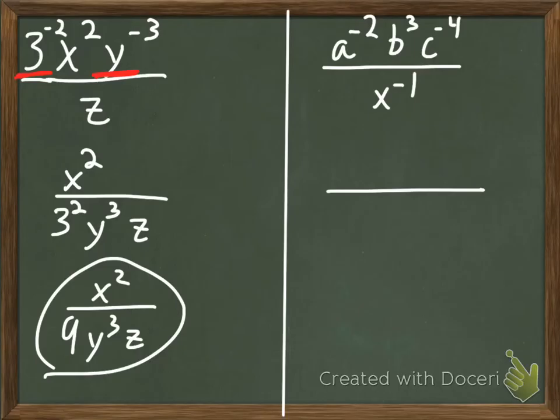So, my division bar, and I look. What stays in the numerator of my fraction? That b to the 3rd. What's going to move from the numerator to the denominator? That a to the negative 2nd moves here and becomes a squared. Our c to the negative 4th becomes c to the 4th.